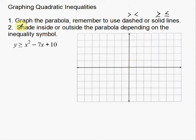After we've graphed the parabola, we want to shade inside or outside the parabola depending on what the inequality symbol tells us. In this case we have a greater than symbol. Once I go through one of these examples I'll show you logically whether to shade up or down, inside the bowl or outside. So the first thing we want to do is graph the parabola.